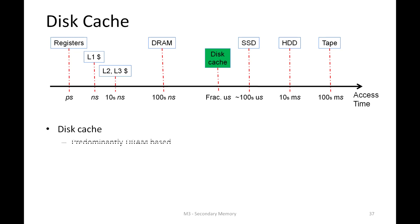Disk cache is predominantly based on faster memory technologies, usually DRAM, though a few storage solutions use SRAM. By the time we reach the disk cache, we would have spent a few hundreds of nanoseconds because we checked the main memory and it was a miss — a page fault — and ended up accessing the secondary memory. But even at that point, if we can give the data back as fast as possible, there is huge scope for performance improvement.